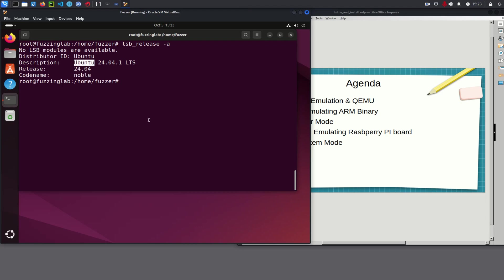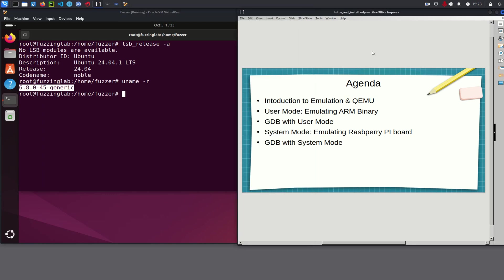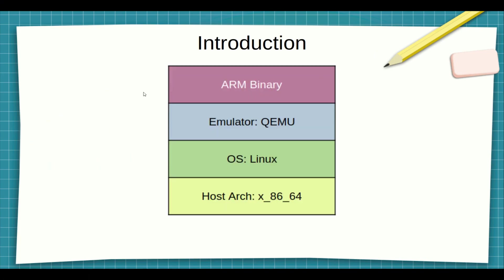So what is emulation? Emulation is a technique that allows software designed for one architecture to run on a different system — known as the host — which doesn't natively support that architecture. For example, in this image here we have a binary which is compiled for ARM, and we want to run it on our host, which in this case is Intel 64.